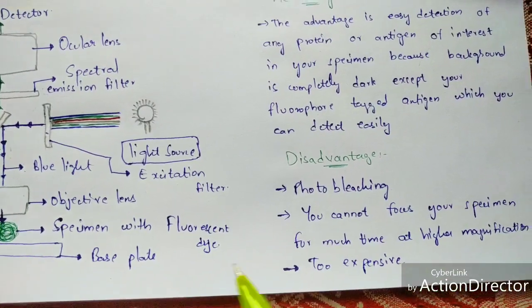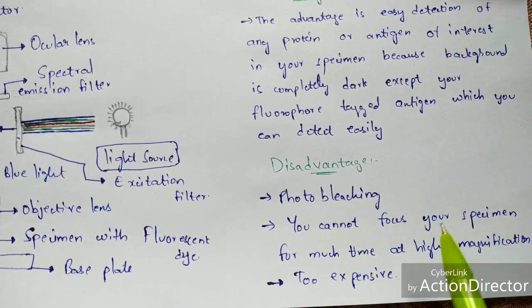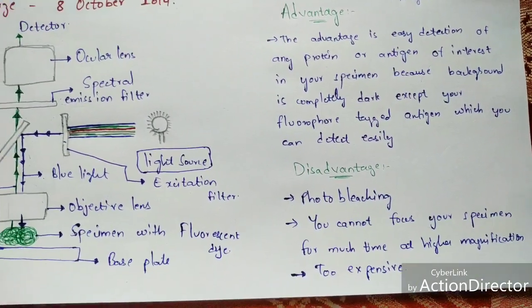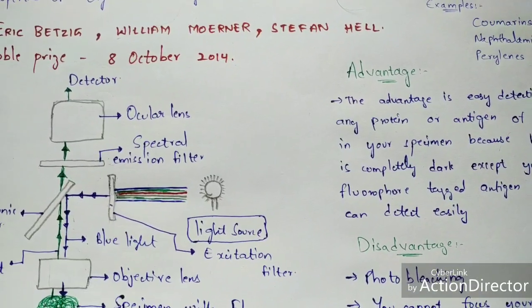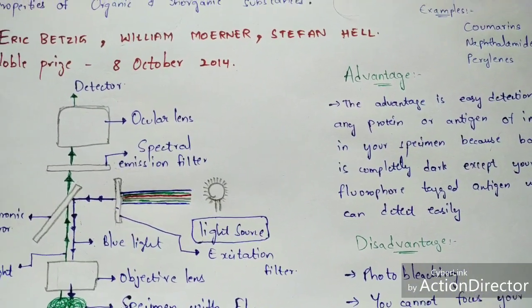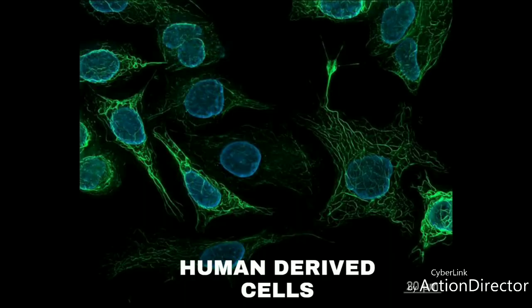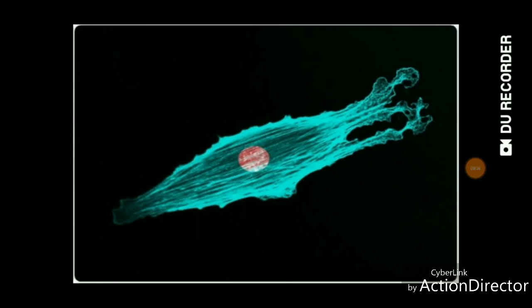Coming to the disadvantages: photobleaching occurs, and you cannot focus your specimen for much time at higher magnification. Also, the fluorescent microscope is too expensive — the cost is very high. At the end of the video, you can see an image formed through fluorescent microscopy, and I'd like you to comment in the comment box with the name of the structure shown.